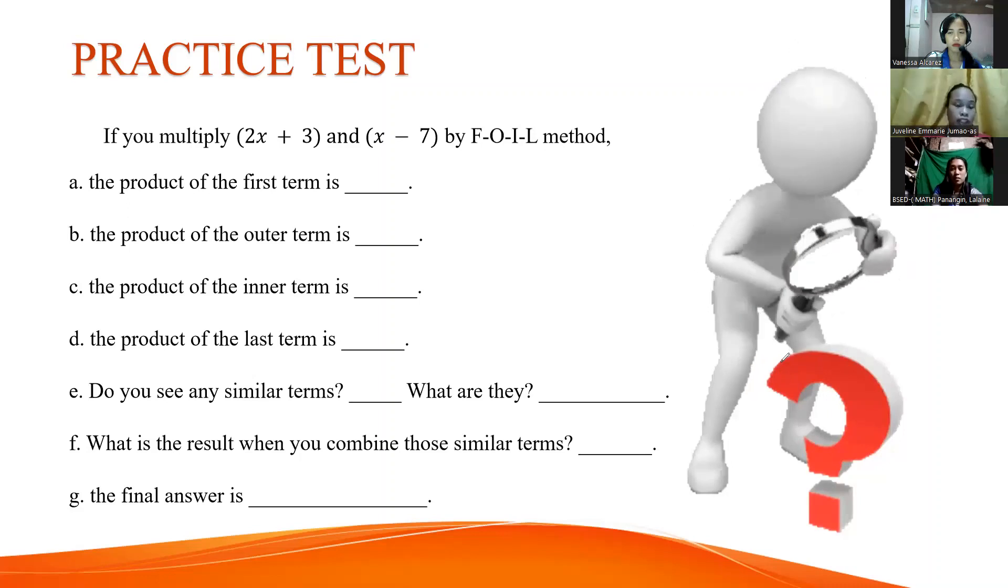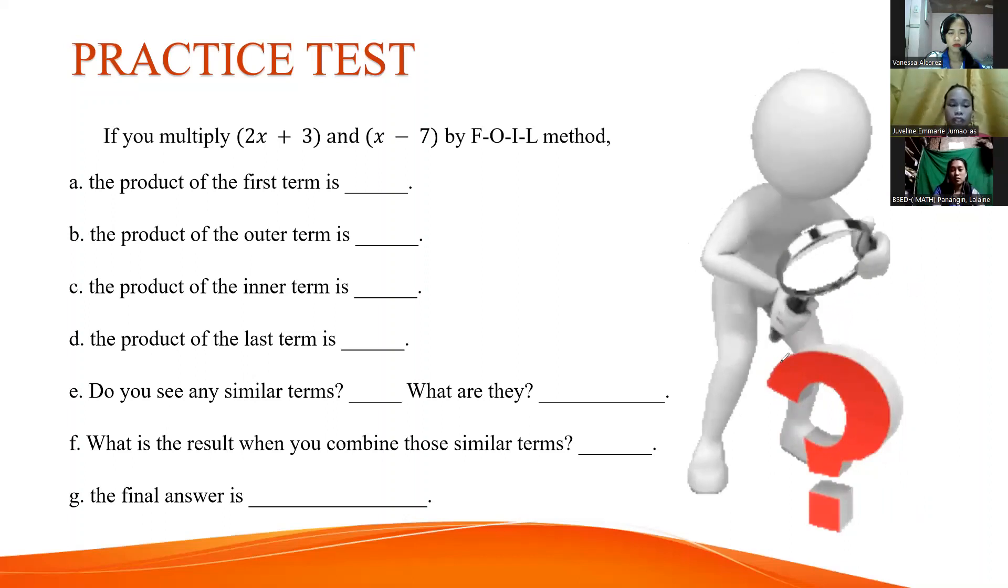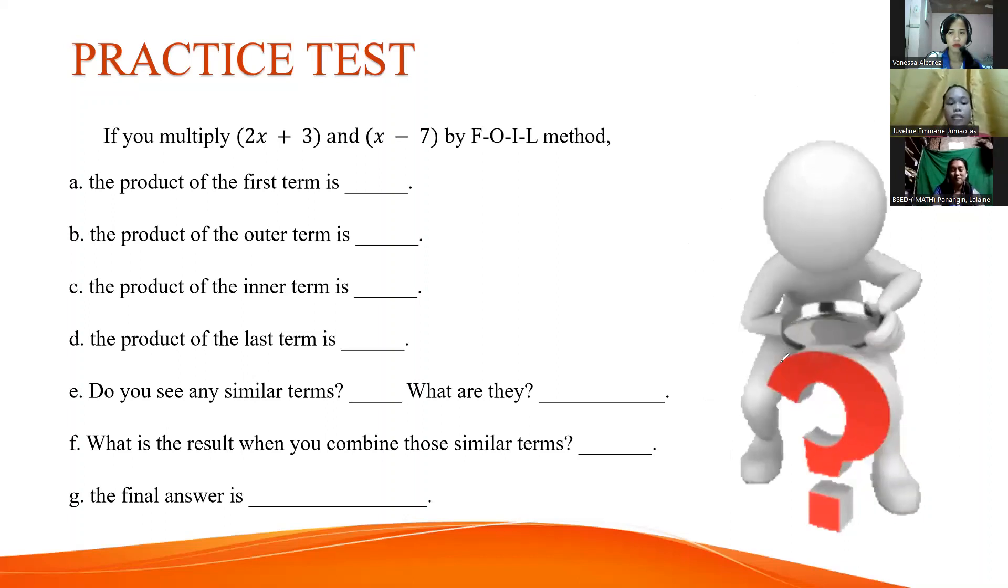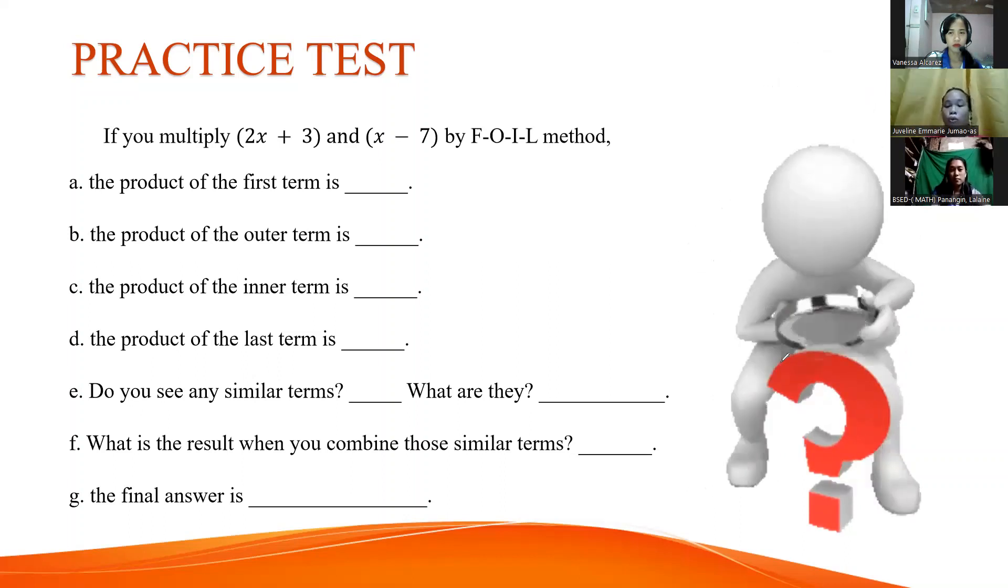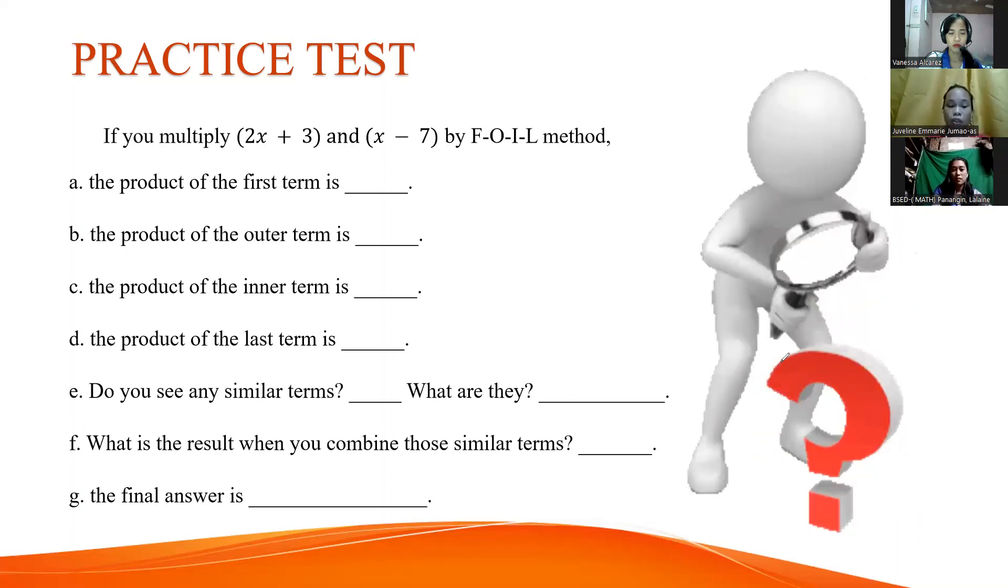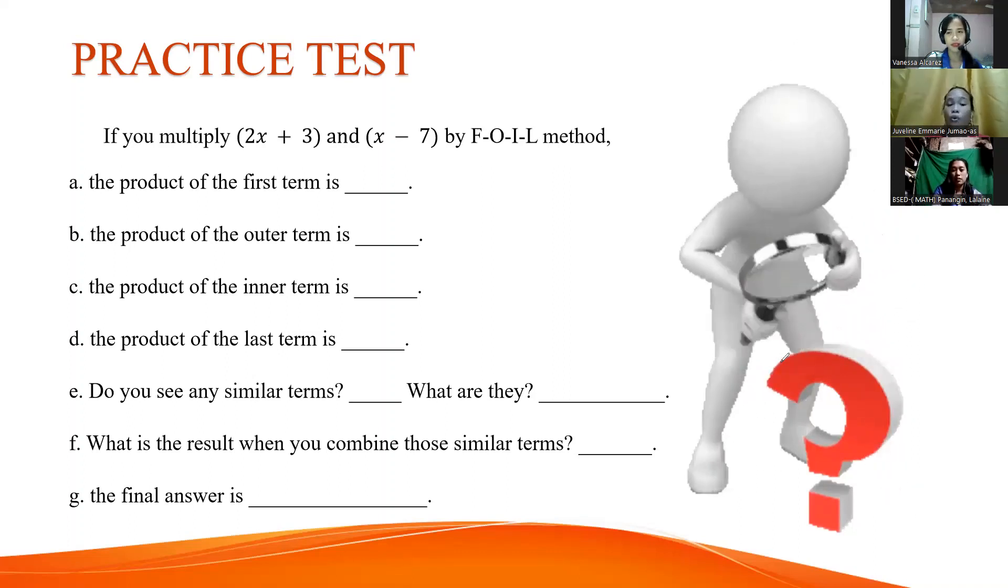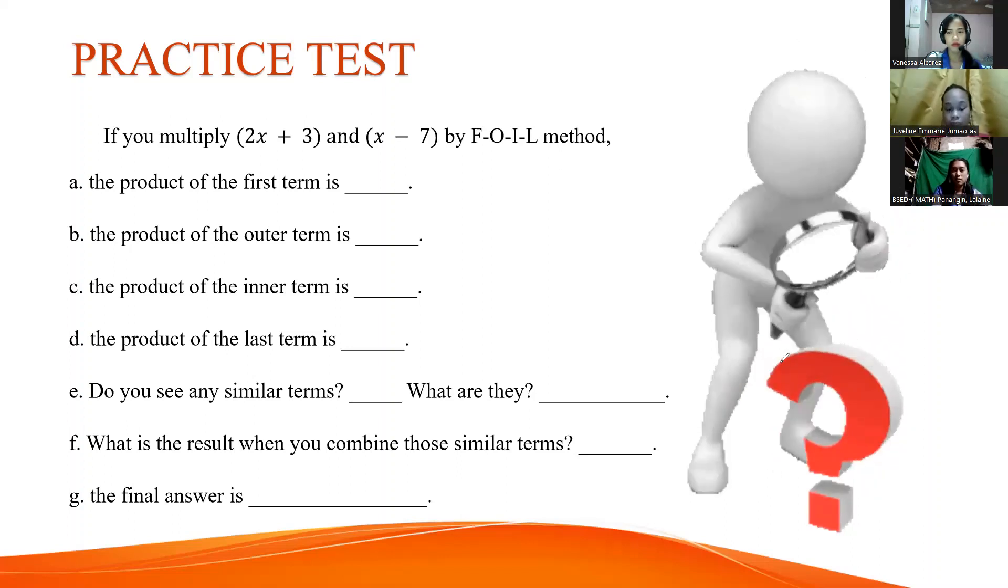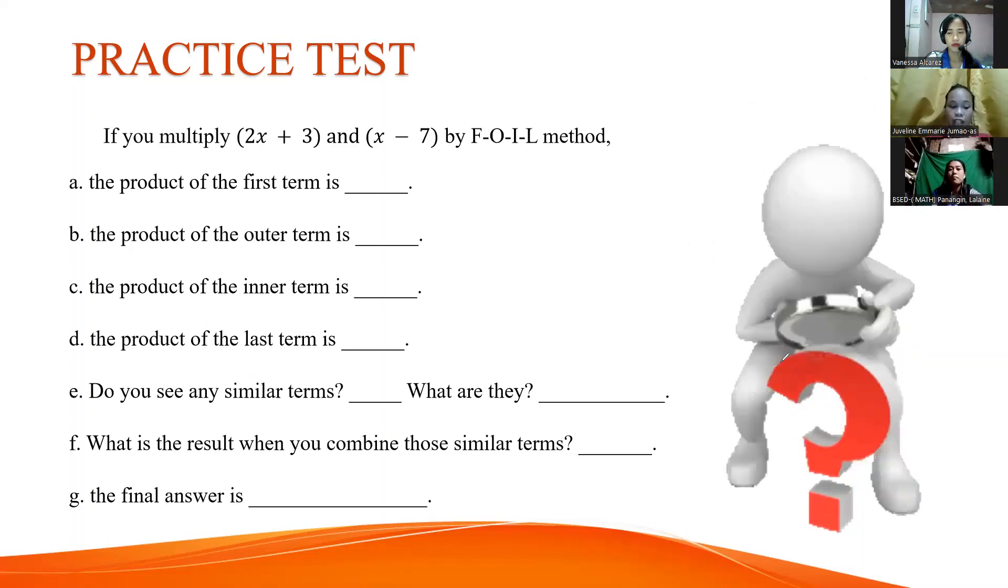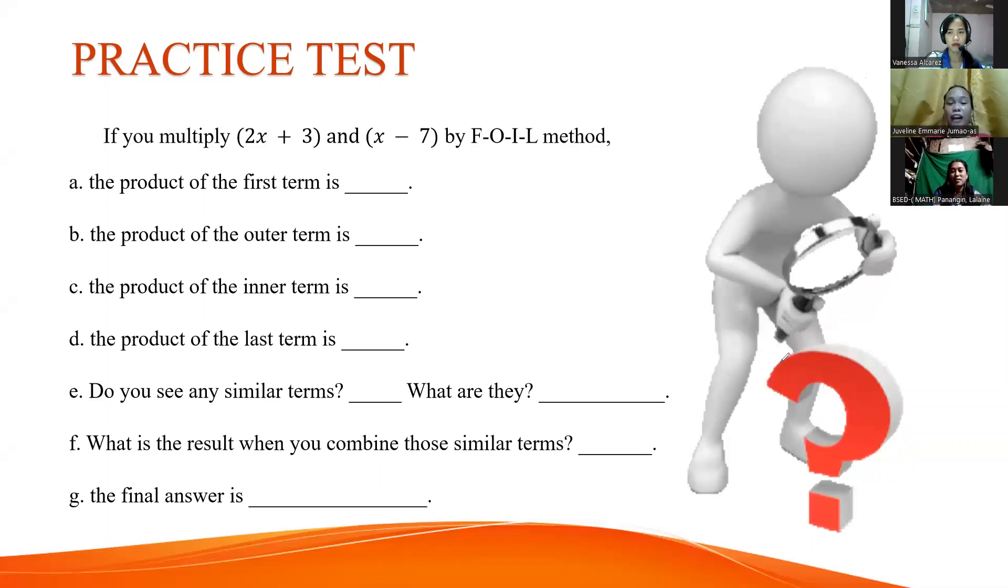Letter A is the product of the first term. Letter B is the product of the outer term. Letter C is the product of the inner term. D is the product of the last term. E is the similar terms. What are they? F is what is the result when you combine those similar terms. Last is G, the final answer. I will give you five minutes to answer our practice test. Five minutes starts now.